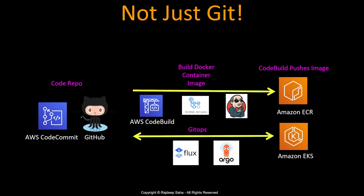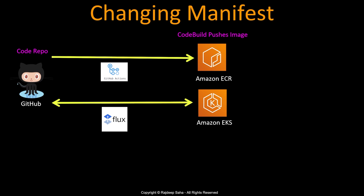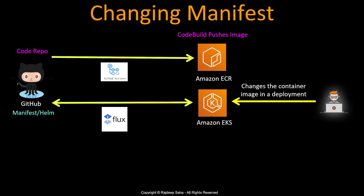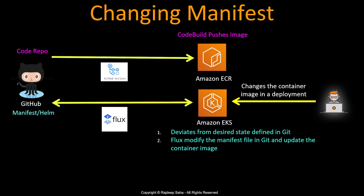Currently GitOps can be done by either Flux or Argo. When you set up Flux or Argo, you'll be prompted to point to a code repository, and it will ensure that the cluster config matches that code repository and automates your deployments. GitOps can also change the manifest if you want — for example, if someone changes the container image in a deployment running within the cluster, Flux can detect that it deviated from the desired state, but instead of reverting the cluster back it can modify the manifest file in Git and update the container image in the deployment file. However, this is only advisable in development, not in staging or production.